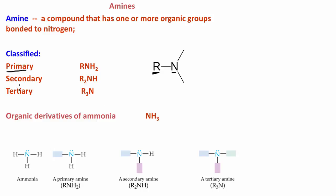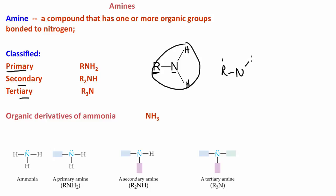We classify amines as primary, secondary, or tertiary. A primary amine is going to look like this, but it's going to have two hydrogens bonded to the nitrogen. A secondary amine is going to have two R groups — nitrogen will be bonded to two carbons and one hydrogen. Then we have the tertiary amine, where nitrogen is bonded to three carbons, so there is no hydrogen bonded to the nitrogen.